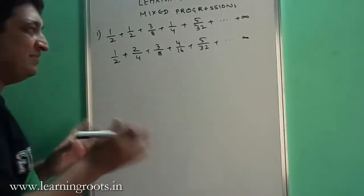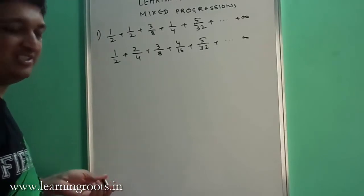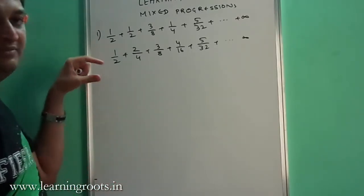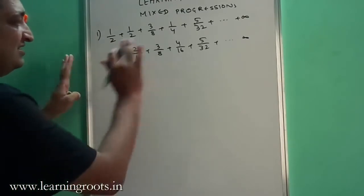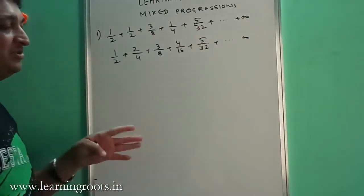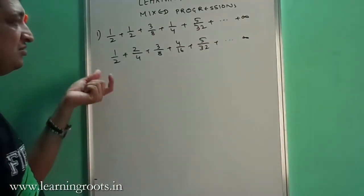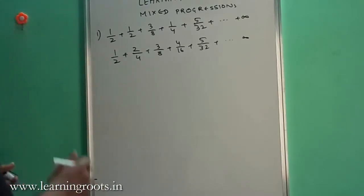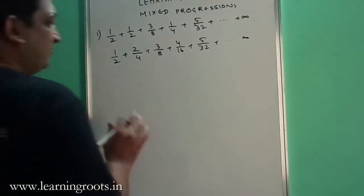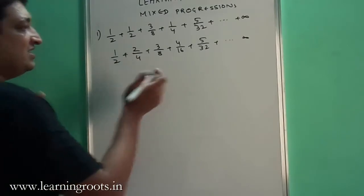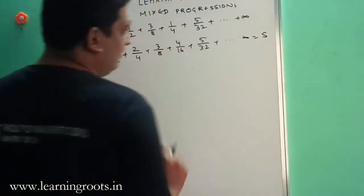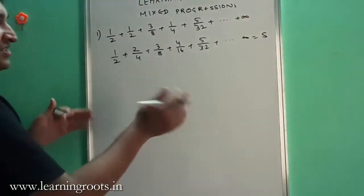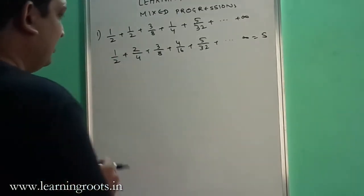One thing you can do is use a big formula which you can memorize, but that is not really helpful because not every question will be from this prototype. The logic will remain the same but the question will not always look like this. So first we assume that this sum is equal to some value S, we equate it to S, form an equation, and then start working on it.